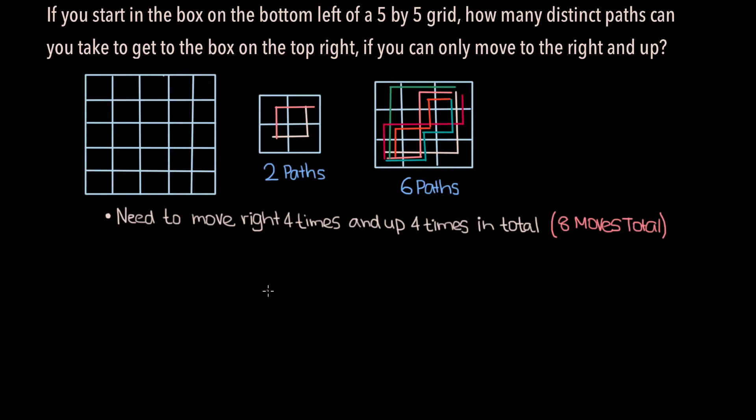If I label these moves m1 through m8, then one possible path would be to move up on moves 1, 3, 4, and 7, and move to the right on the rest. Another distinct path could involve moving up on moves 1, 2, 5, and 8, and right on the rest of the moves.